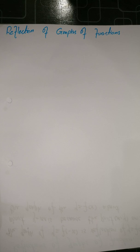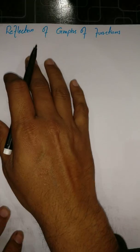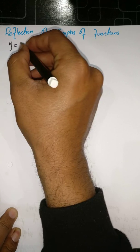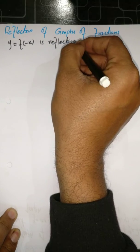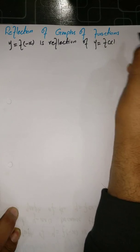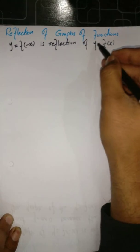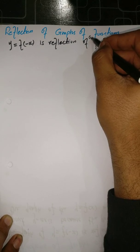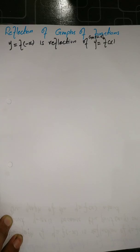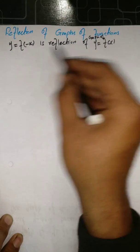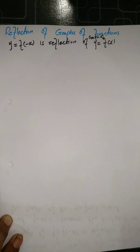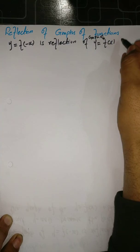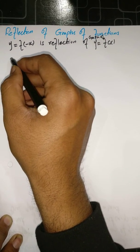Dear students, whenever we have to reflect our graph there are two types of reflection: first is about the x-axis and second is about the y-axis. The graph of y = f(-x) is a reflection of y = f(x), and these two graphs are reflections of each other.